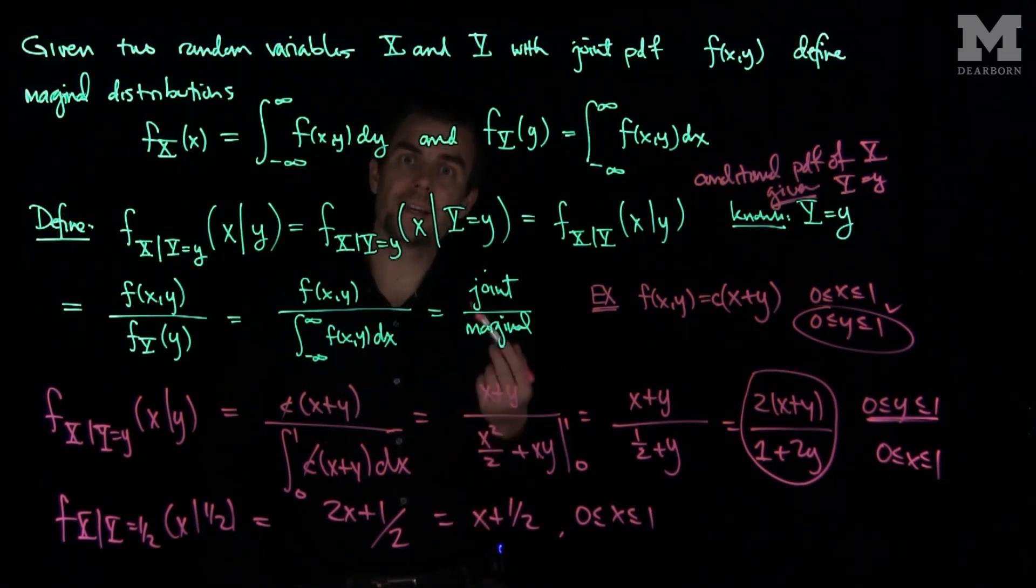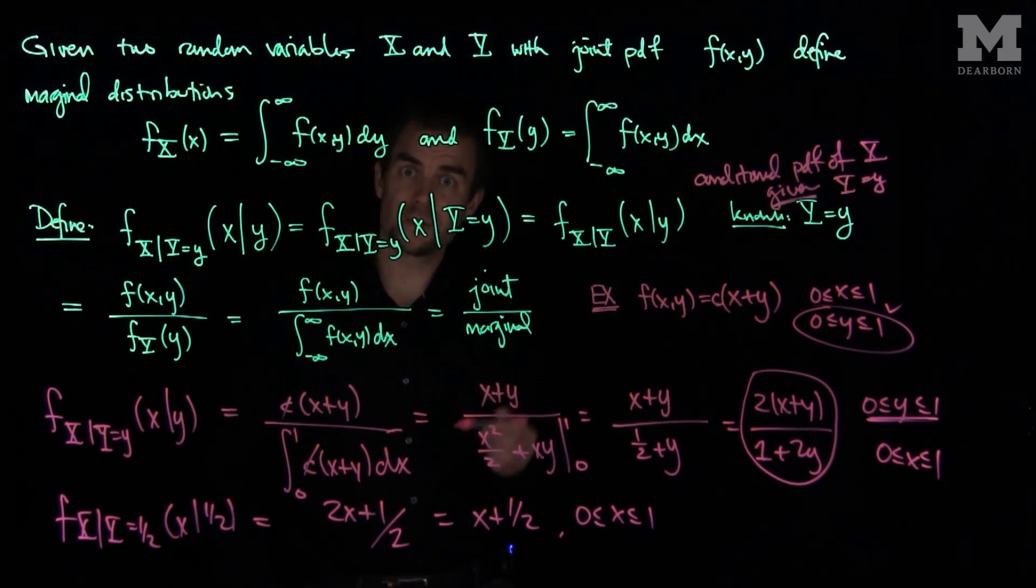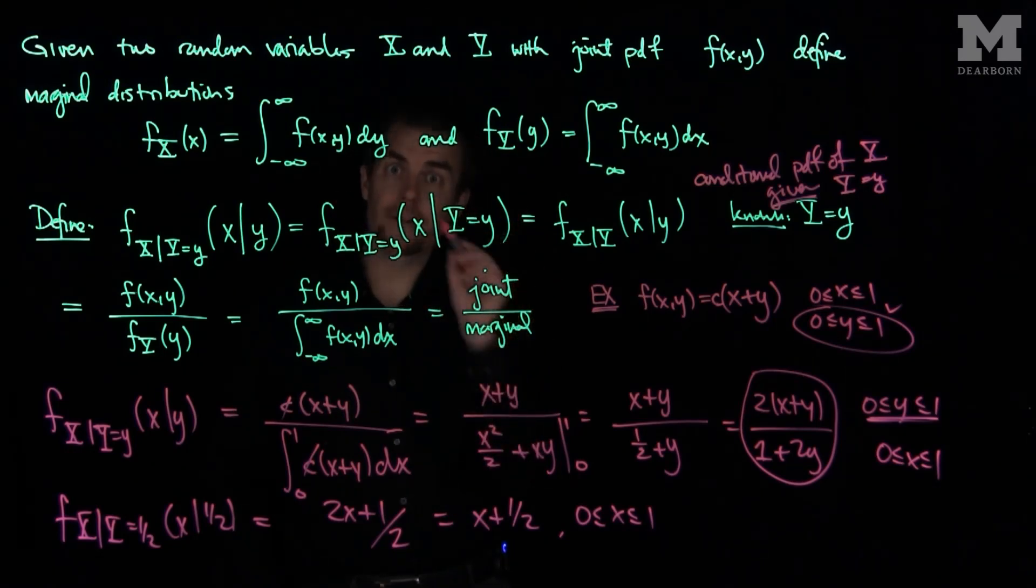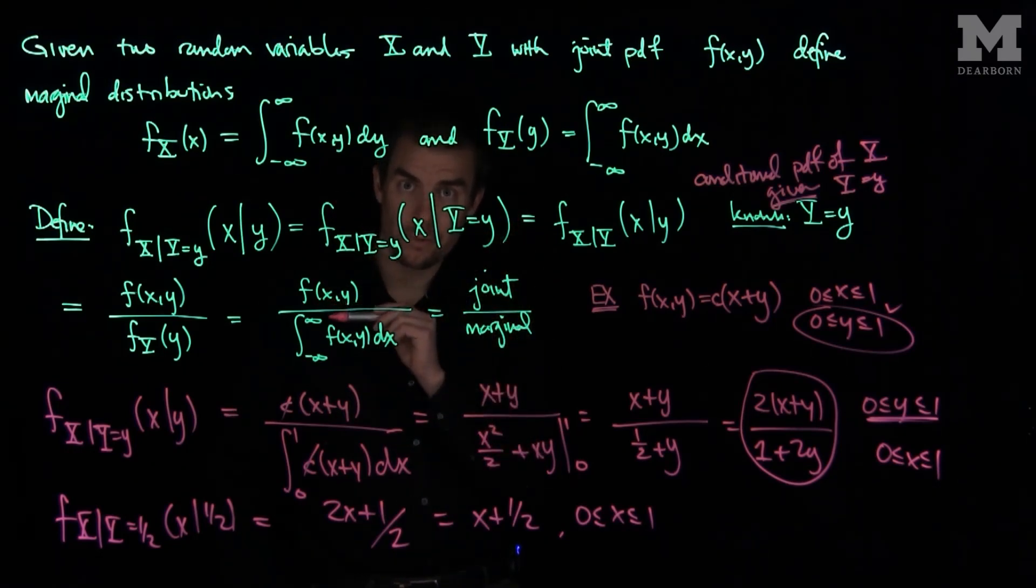So when finding the conditional probability density function of x, given that Y is equal to y, you have the joint PDF divided by the marginal PDF of y. Thank you very much.